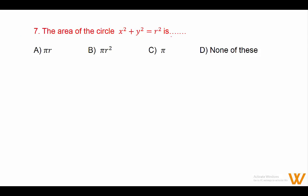Question 7: The area of the circle x² + y² = r². We know the formula: area of a circle is πr². Answer is option B: πr².